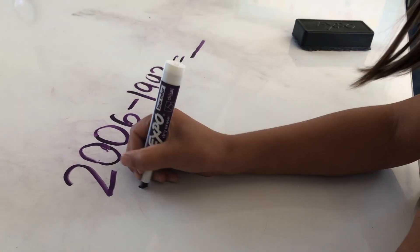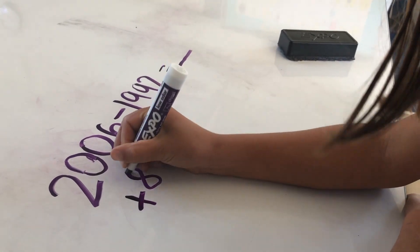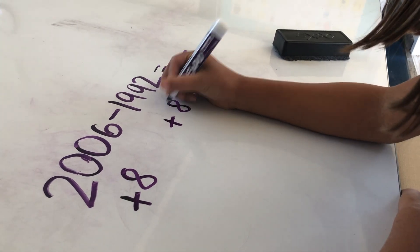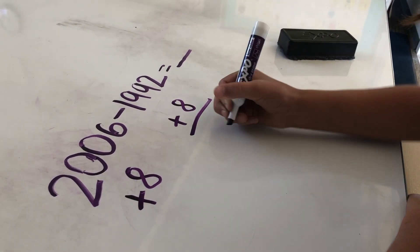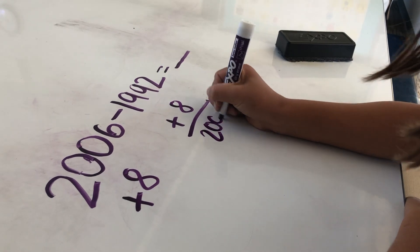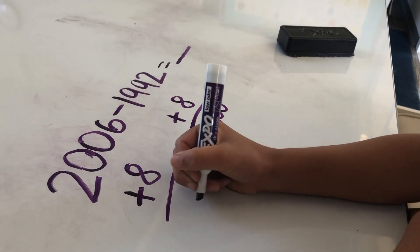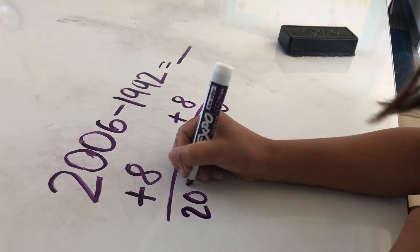Well, what I would do is add 8 to 2006 and add 8 to 1992. So I would be left with 2014 and 2000.